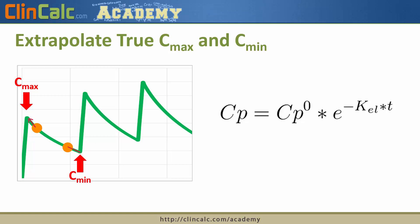And again, if your trough level was drawn a little bit too early, you may have to use the equation right here, which is again that half-life equation, and basically come up with what is the true trough or the true minimum value of vancomycin for that patient.